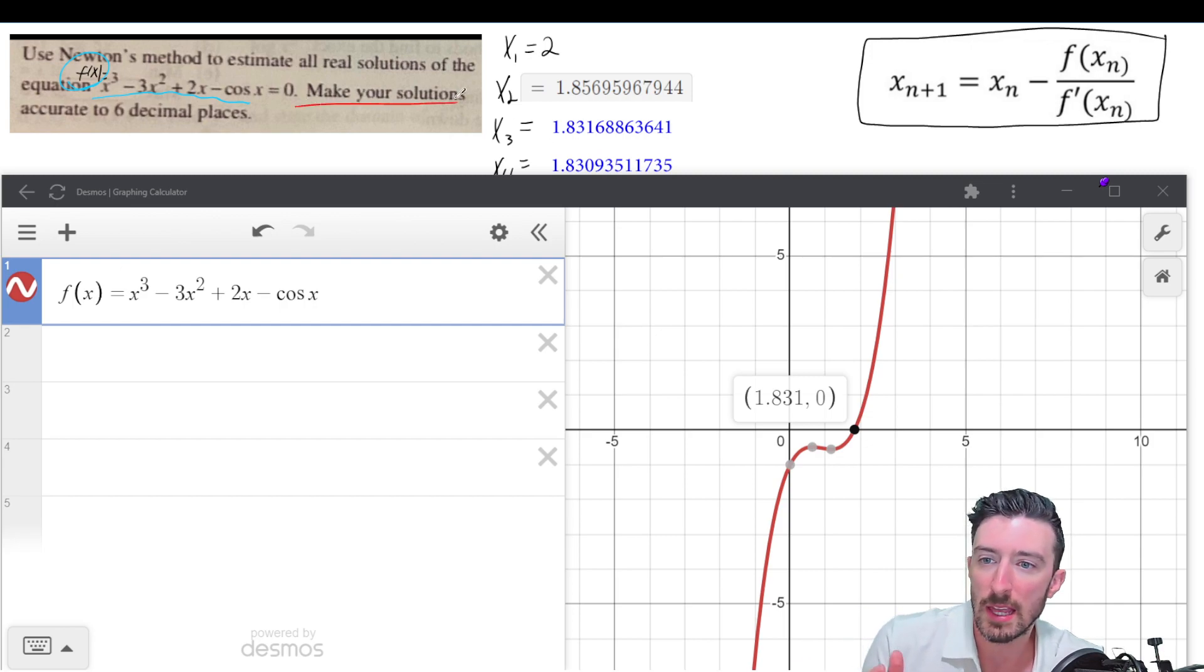Anyway, it says make your solutions accurate to six decimal places. Okay, so this is not good enough. Desmos is only giving me three decimal places.